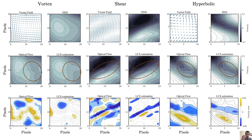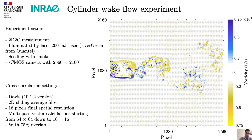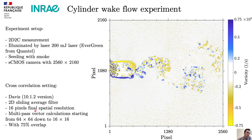In both global and local regions we have improvements in synthetic data. The next step is the experimental study — we performed experiments of cylinder wake flow at Reynolds number 3900. We had 2D2C measurements using a laser for illumination and a 5-megapixel camera, and we compared the results with Davis cross-correlation-based PIV. In Davis software, our final spatial resolution was 16 pixels and we used a multi-pass vector calculation technique, with a final overlap value of 75%.